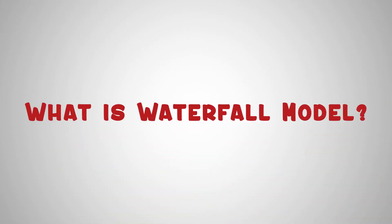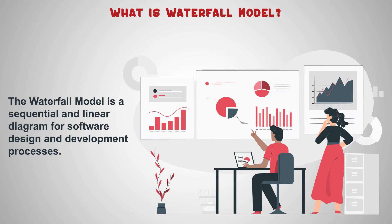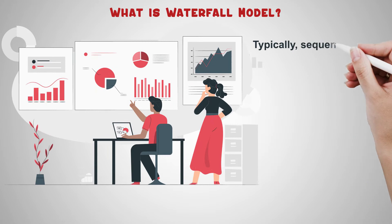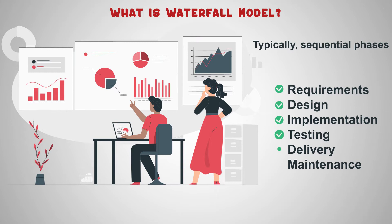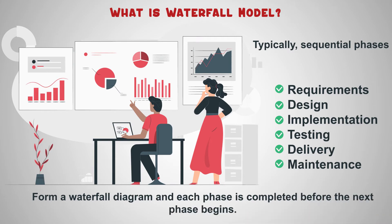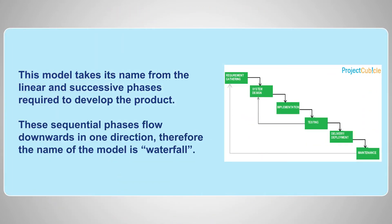The waterfall model is a sequential and linear model for software design and development processes. Sequential phases — requirements, design, implementation, testing, delivery, and maintenance — form a waterfall diagram, and each phase is completed before the next phase begins. This model takes its name from the linear and successive phases required to develop the product.